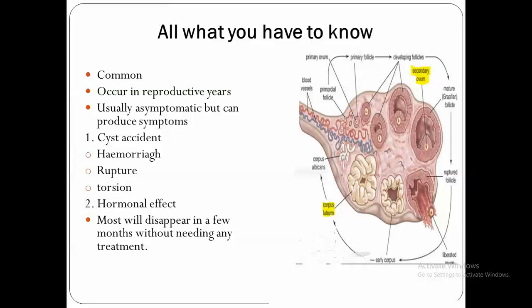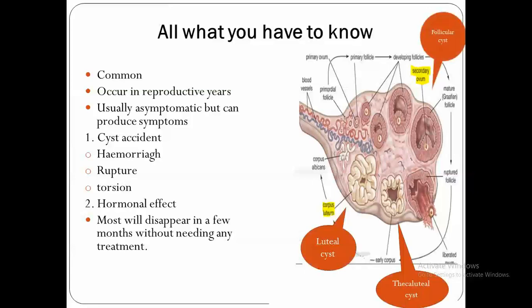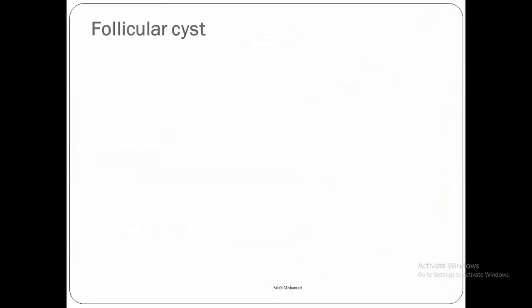Functional ovarian cysts are of three types: follicular cysts, meaning follicles that fail to ovulate; luteal cysts, meaning the corpus luteum that fails to regress; and theca lutein cysts.